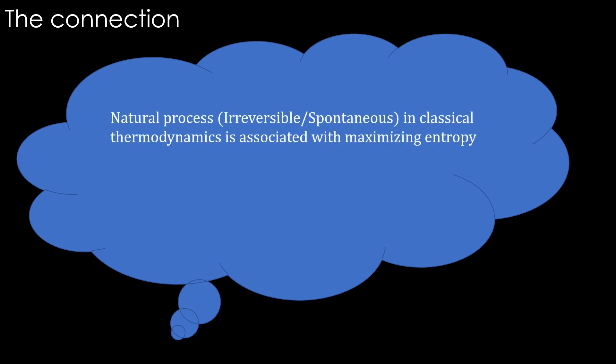Now think about this connection: natural process or irreversible or spontaneous process in classical thermodynamics is associated with maximizing entropy. Natural process in statistical mechanics is associated with maximizing W. You know, after the classical thermodynamics, people were searching for what is the physical interpretation of entropy. Now we are getting some clues. Let's assume yes. Later we will see whether this assumption is correct or not. So let's say the entropy S is a function of W.